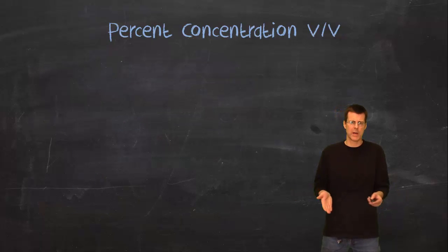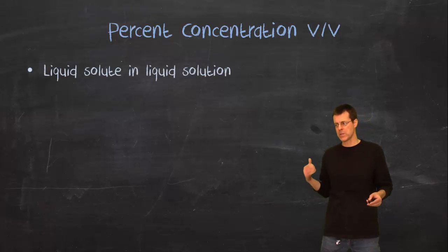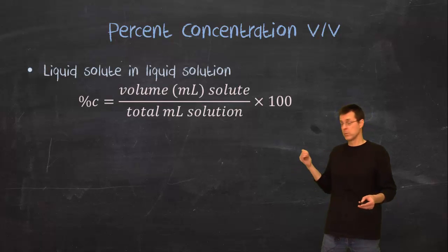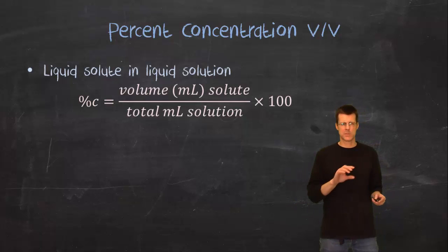We could also have a percent concentration volume over volume and we would do that if the solute was likely a liquid. Now we're not going to have too many of those but if you did you would take the milliliters of solute over the milliliters of solution. And you'll actually see that one sometimes if you read the bottle of vinegar carefully it will say something like percent concentration by volume.